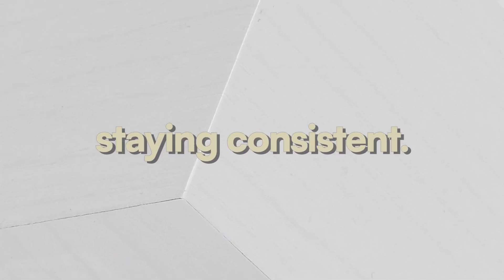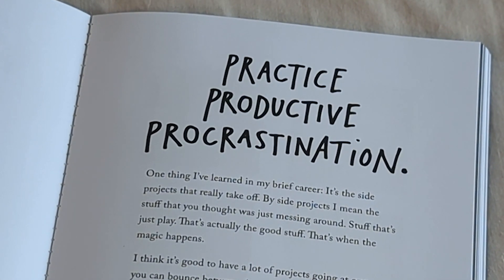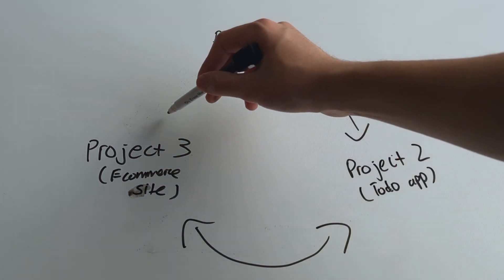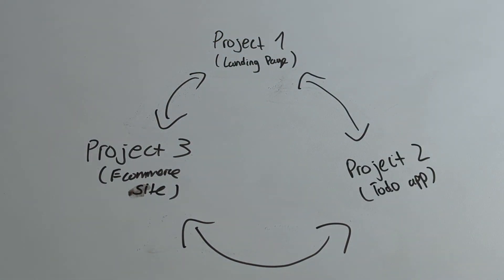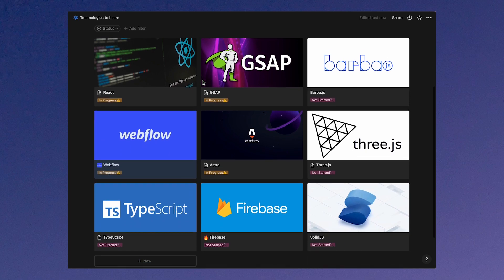To stay consistent with coding, I aim to code every day for at least an hour. A valuable concept I came across in Austin Kleon's book 'Steal Like an Artist' is the idea of productive procrastination — by having two or three coding projects, I can switch between them when I feel tired or uninspired with one particular project. I've incorporated this approach into my workflow and it's been quite effective. Another method I implement to stay consistent is maintaining a list of technologies I want to learn, which motivates and excites me to keep coding.